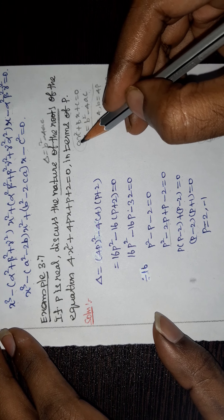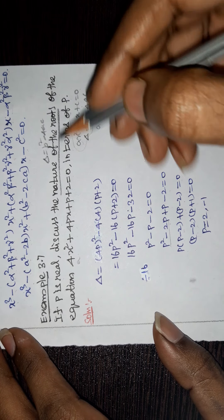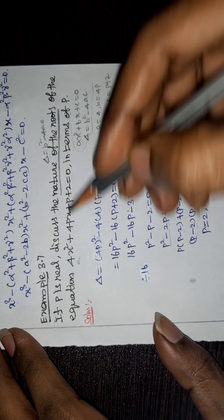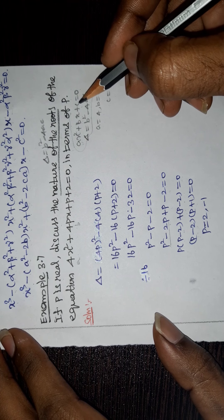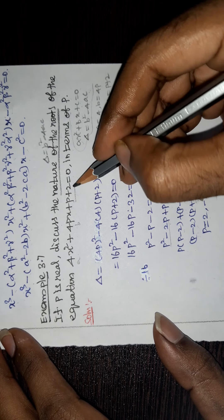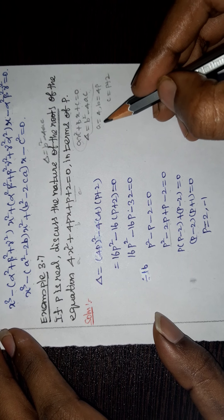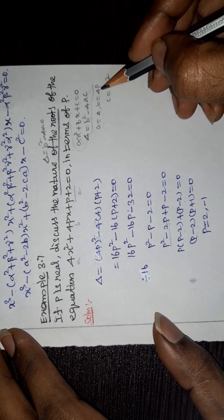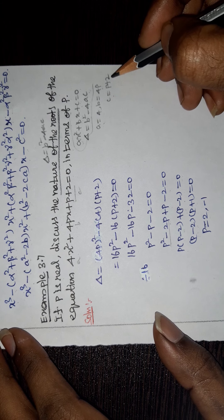The coefficient of x² is a, coefficient of x is b, and c is the constant term. So a = 4, b = 4p, and c = p + 2.